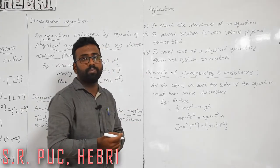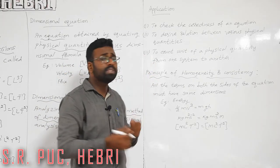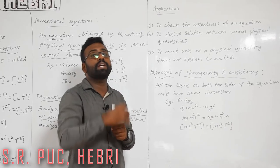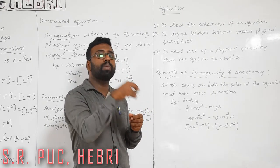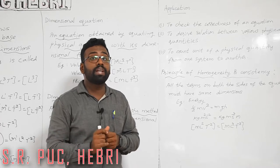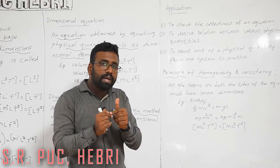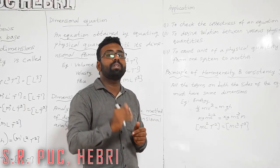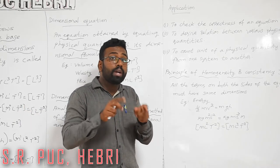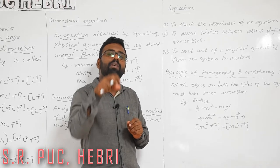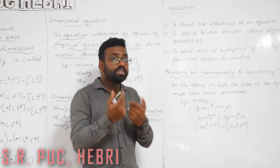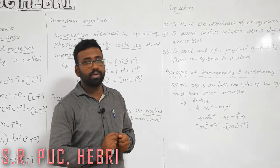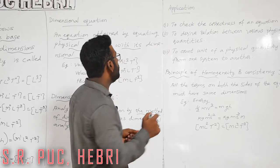Using the dimensional method you can check whether an equation you have written is correct or not. For example, for energy you should get the same dimensional formula whether you use ½mv² or mgh. If you do not get the same dimensional formula, the equation is wrong. So you check the correctness of the equation by dimensional analysis.